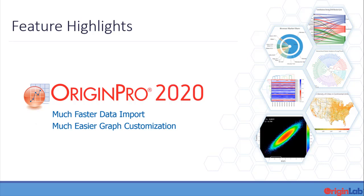Origin Lab is proud to announce the release of Origin and Origin Pro 2020, featuring much faster data import and much easier graph customization. This version was released at the end of October 2019.